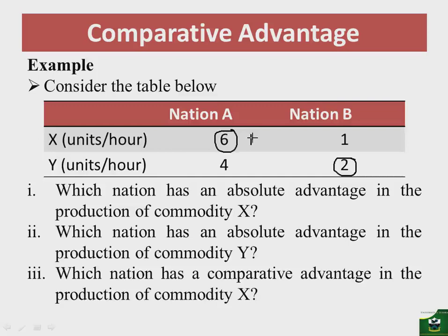If nation B produces commodity Y — its comparative advantage commodity — it channels the hours previously used for commodity X to the production of commodity Y. To produce the six units of X that nation A produces, nation B would need six hours.